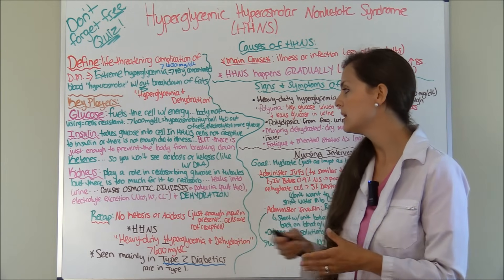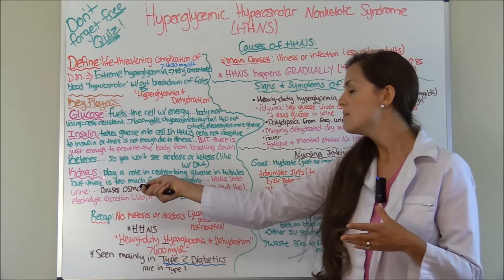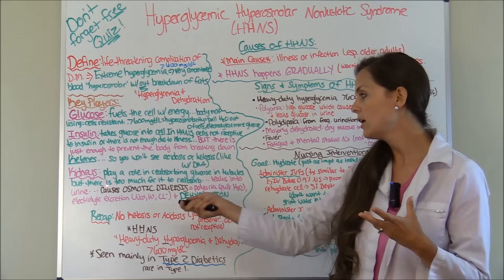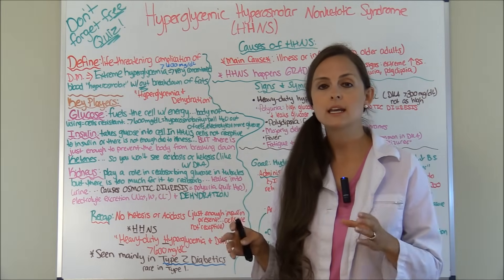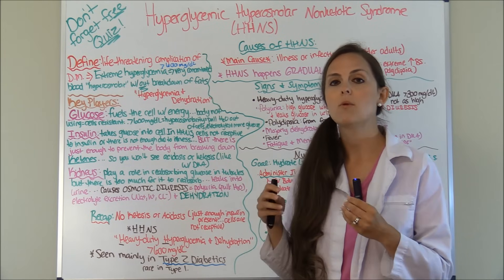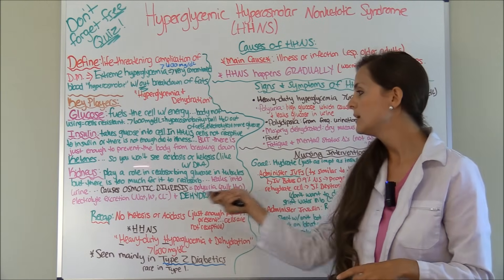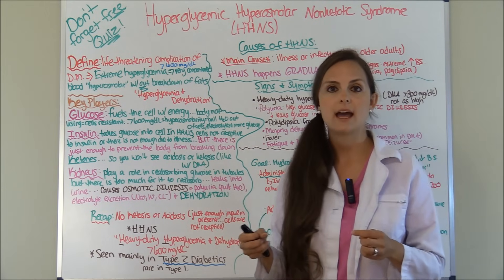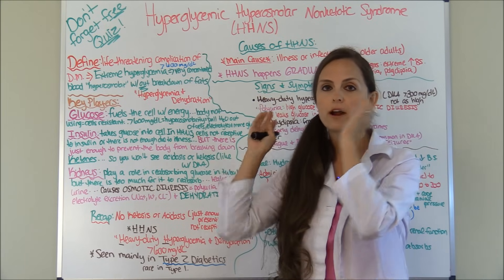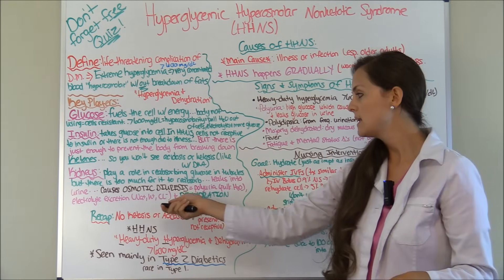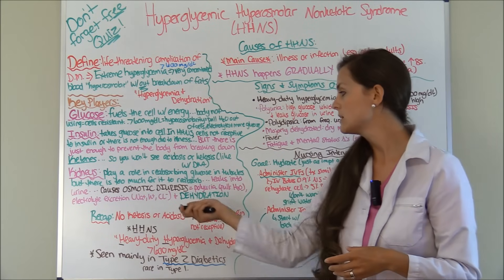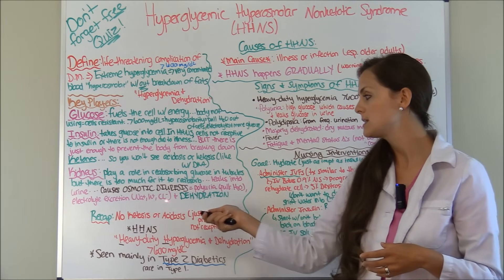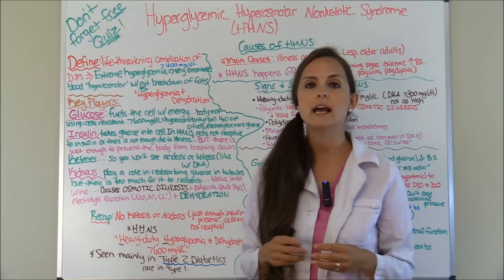The kidneys also play a role. Kidneys normally reabsorb glucose in the renal tubules, but here there is way too much glucose in the blood for the kidneys to reabsorb. So it leaks into the urine, causing osmotic diuresis — water moves to the most concentrated area, so you pull extra water out and see polyuria. You're also going to see more electrolytes being excreted, such as sodium, potassium, and chloride, leading to dehydration.